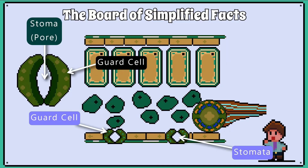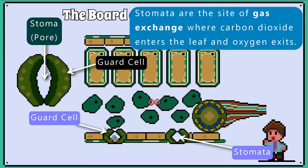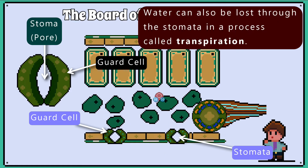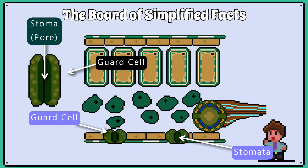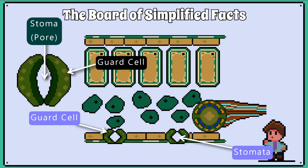This is the site of gas exchange where carbon dioxide for example can enter the leaf and oxygen can exit. Water can also be lost through the stomata in a process called transpiration. The guard cells can close and open to regulate the rate of transpiration and gas exchange.